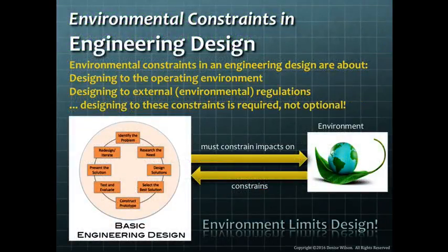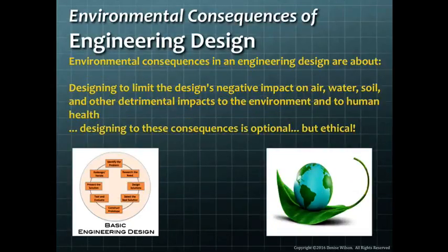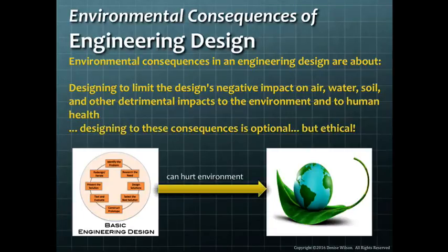Thus far, in taking a look at the relationship between environment and engineering design, we've looked at environmental constraints — those that mandate we consider them in the design, whether that means a range of operating temperatures or an air emission regulation. Environmental constraints demand our attention during design. But environmental consequences are very different. These are the impacts or ways in which our designs and eventual products may hurt the environment, and we are not necessarily obligated to prevent these consequences.